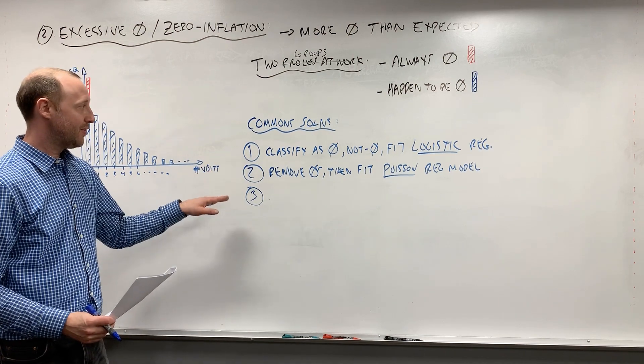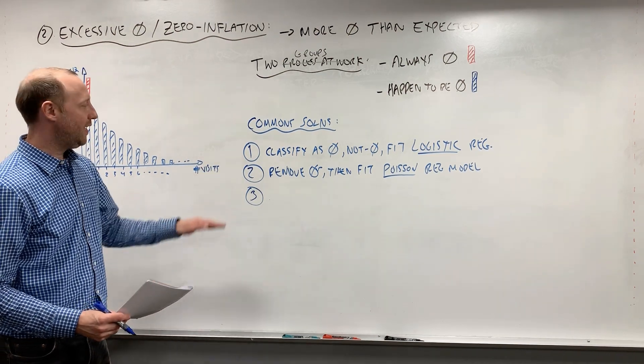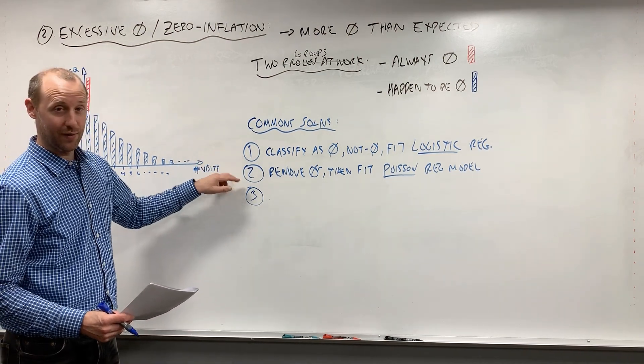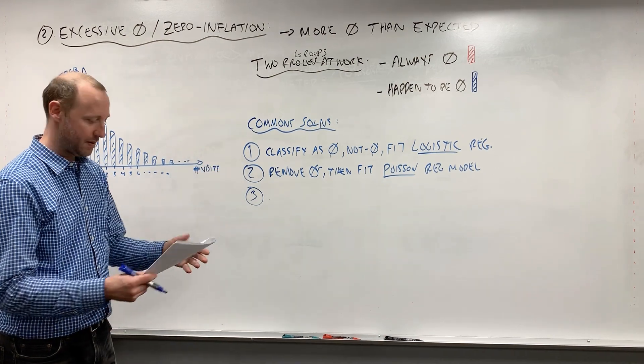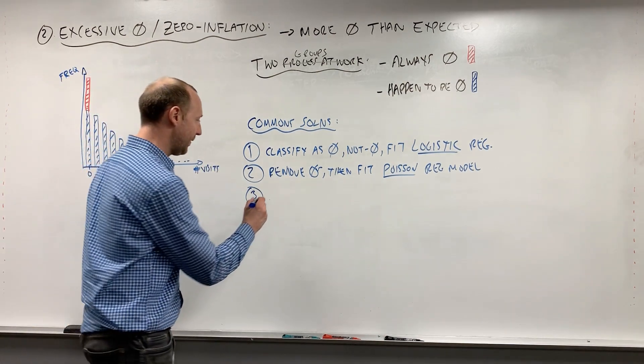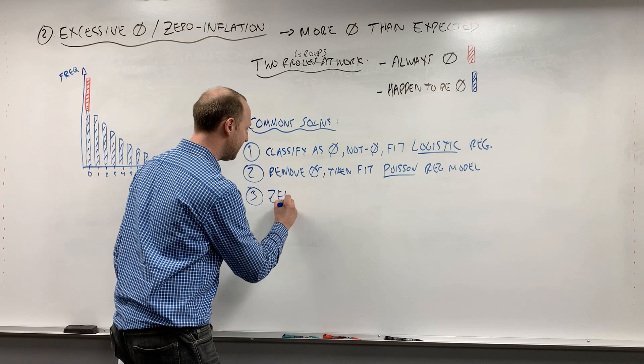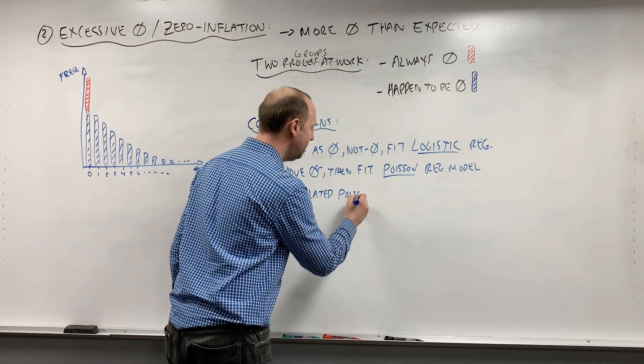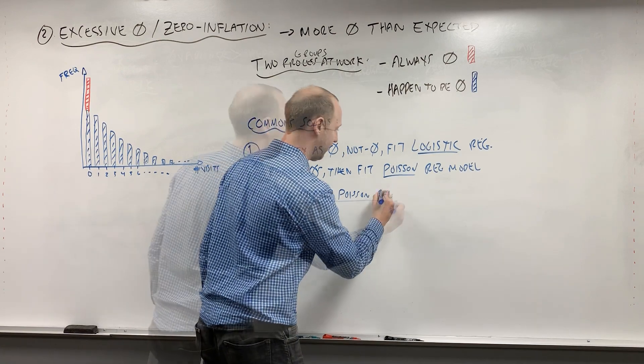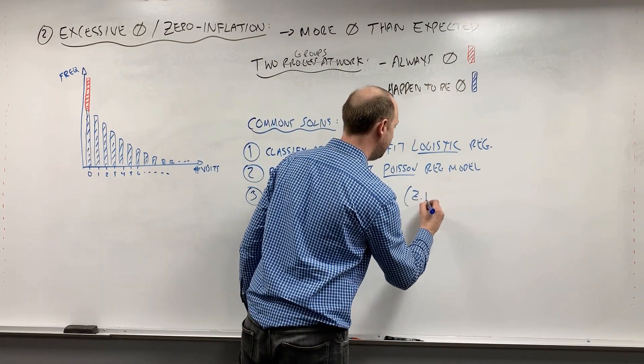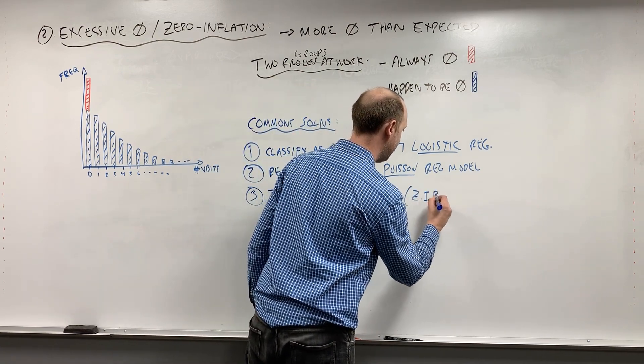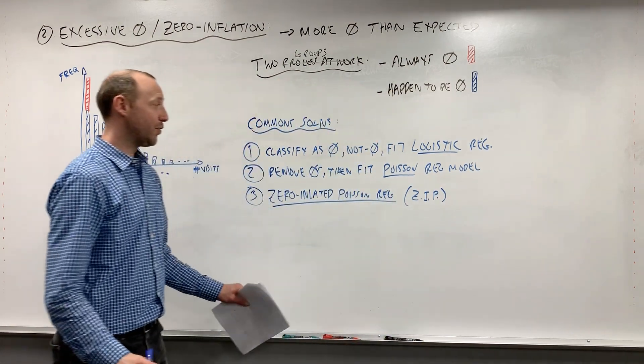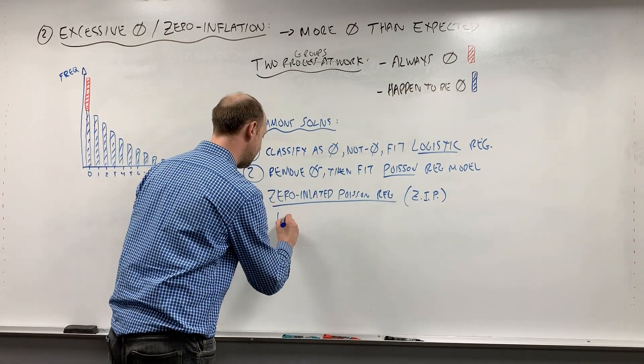Let's get to talking about a third solution, and in a way this is a combination of one and two. It tries to take these two solutions but make them a bit better. It's called zero inflated Poisson regression, or sometimes it gets abbreviated as ZIP, ZIP models, zero inflated Poisson.